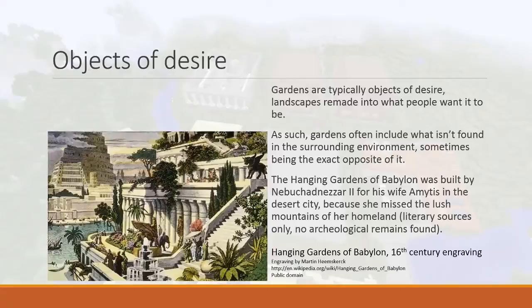The wife wanted a certain kind of landscape like her home, so the king made it for her out of the desert — he built a mountain in the desert because she wanted it. That's what we mean by 'objects of desire' — you make a garden that looks like what you want. Even more than architecture, we do this with landscape, because architecture is often very functional and practical, whereas with gardens we judge them by how much they satisfy our desires for a certain kind of nature.